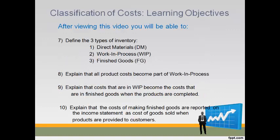You will also be able to define the three types of inventory, explain that all product costs become part of work in process, explain that costs in WIP become the costs in finished goods when the products are completed, and explain that the costs of making finished goods are reported on the income statement as these costs are sold to customers.